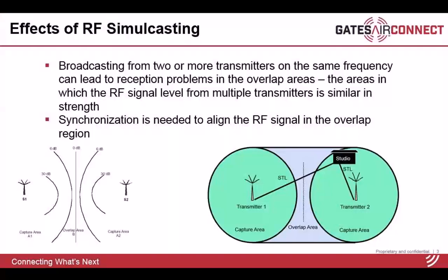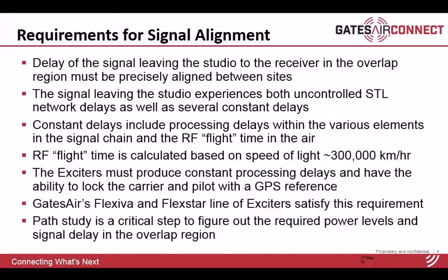The main idea behind SyncroCast is to align audio signals coming from different transmitter sites in the overlap region so that when they are processed simultaneously in the receiver, they add constructively rather than destructively. For that to happen, both the frequency and phase of the signals must be aligned. We have to align the audio delay of signals from different transmitter sites into the overlap region. This delay has two main components: the studio-to-transmitter link delay, which is not in our control and can vary over time, and constant delay components from signal processing hardware, plus the RF flight time delay, which can be calculated using the speed of light constant.